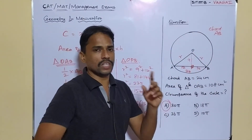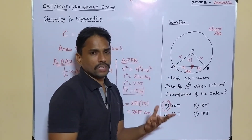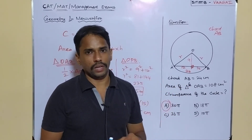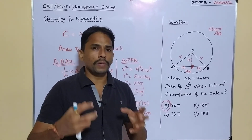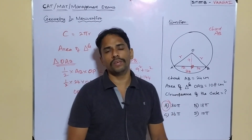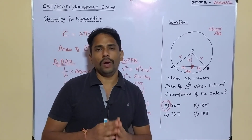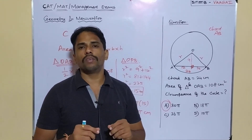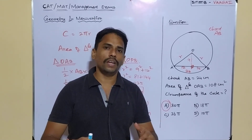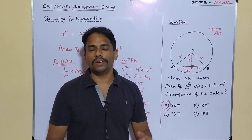This is how questions with multiple concepts are given — a triangle inside a circle, combining area formulas, isosceles properties, and Pythagorean theorem. Once you are strong with the basics, these problems become straightforward. I hope it is clear. Post any doubts in the comment box, give a like if useful, share with friends, and please subscribe. See you in the next session — thank you!